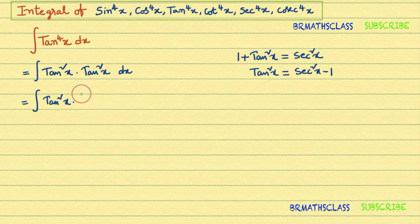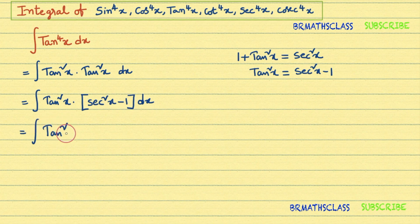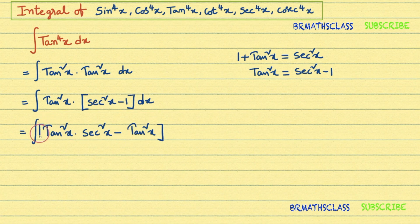So the integral becomes integral of tan²x into (sec²x − 1) dx. Multiplying tan²x with this expression, we get tan²x · sec²x − tan²x · 1, that is tan²x · sec²x − tan²x dx.